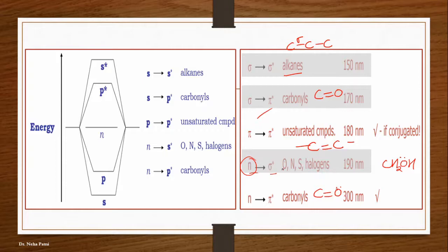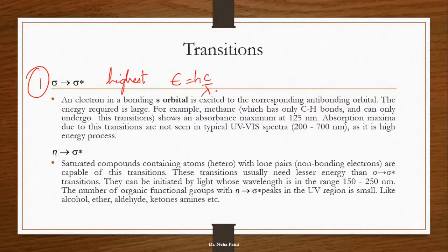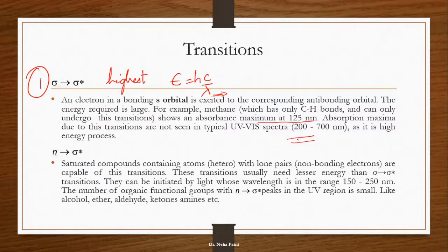So from the structure we can identify which transition is likely. For a final revision: since E = hc/λ, there is an inverse relation — highest energy requirement means lowest wavelength. Sigma→sigma* shows absorbance around 125 nm, which is below the UV range of 200–400 nm. This means compounds with only single bonds are not going to show a UV spectrum, as they absorb at too low a wavelength.